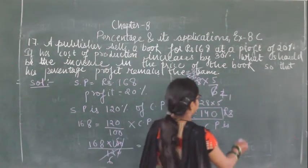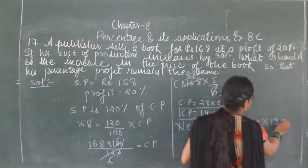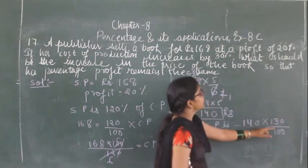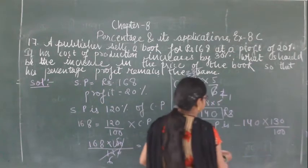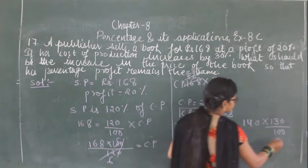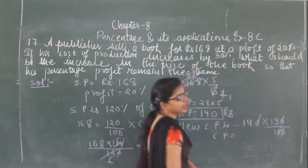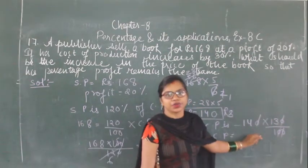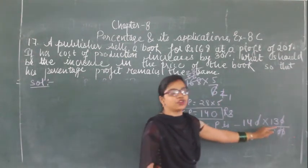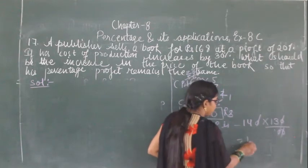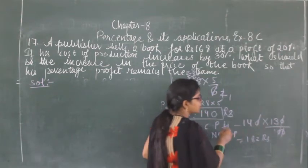New cost price equals 140 into 130 upon 100, because there is a 30% increase. Solving this gives new cost price equal to 14 into 13, which is ₹182. This is the new cost price.